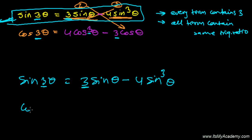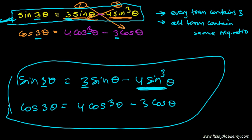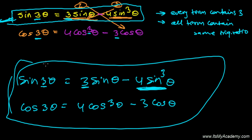Now for cos 3 theta, it's just the opposite: the first term becomes the second term and the second term becomes the first term. So 4 and sine is replaced by cos — 4 cos cube theta. Minus, then 3, and sine is replaced by cos — 3 cos theta. That's it, this is how we can remember the formula for sine 3 theta and cos 3 theta.